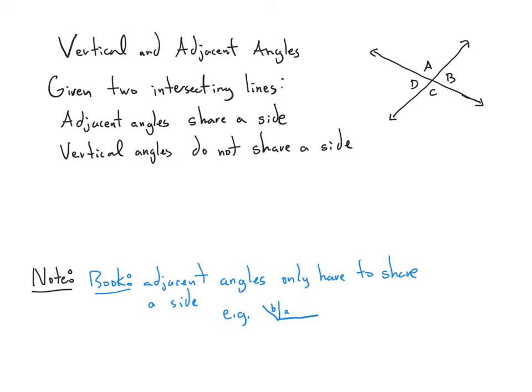Two important concepts for us are going to be vertical and adjacent angles. For our purposes, I'm going to define vertical and adjacent angles just in terms of two intersecting lines — an X — because we're going to talk about how angles relate in terms of an X.